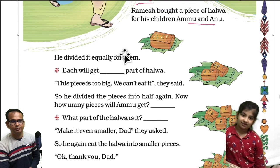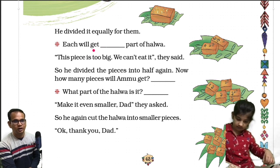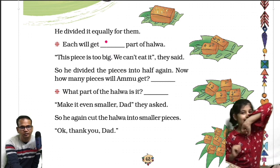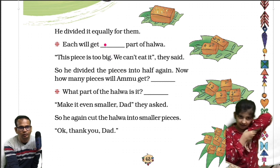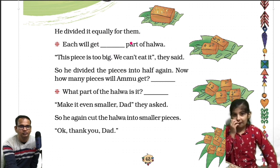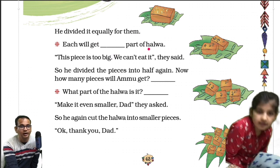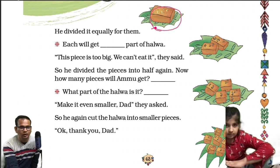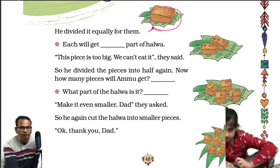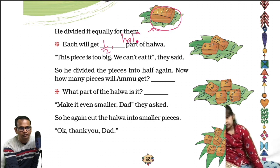See what the question is — Ramesh bought a piece of halwa for his children Ammu and Anu, and he divided it equally for them. Each will get one by two part of halwa. It's only one halwa, divided into two parts, so each gets half. We can say half, or one by two.